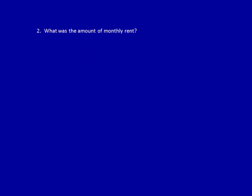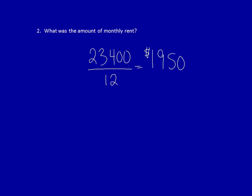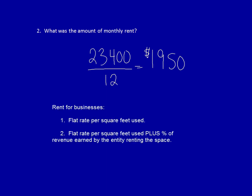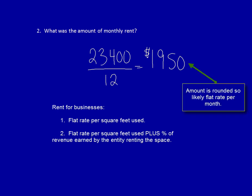What was the amount of monthly rent? We take the total rent expense and divide it by the period that the statement covers. Do you believe this is the actual amount of the monthly rent? Rent can be charged in two ways: a set amount every single month, or alternatively a smaller set amount every month plus a percentage of the revenues earned by the company renting the location. We don't know which method the landlord uses, but it's likely the landlord is charging $1,950 every single month.